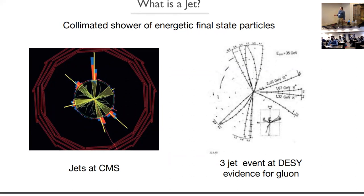Just to get up to date, I looked around for pictures of jets. Here's jets at CMS — you see several groups of particles. They reconstructed 236 different jets. I put this up because I thought it was pretty good.